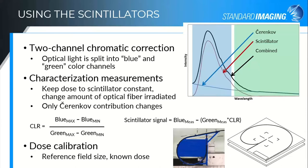The characterization measurements are designed to keep the dose to the scintillator constant while changing the amount of optical fiber that's in the field. Once positioned, you do what we call a minimum fiber measurement — with as little fiber as possible in the field — and then wrap the fiber around in one of the jigs. The blue here is the water tank jig for the W2; the larger slabs for the W1 have channels milled out. The change in Cherenkov changes only the broad-spectrum Cherenkov signal, not the scintillation signal. We look at the difference in the blue channel signal compared with the green channel signal for those two configurations to create what's called a Cherenkov light ratio — a correction factor applied to subsequent measurements to remove the Cherenkov from the blue signal based on the amount of signal in the green channel.